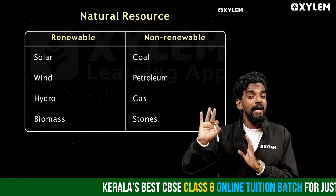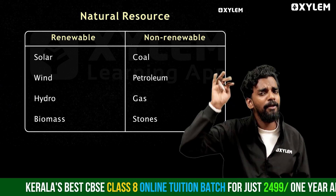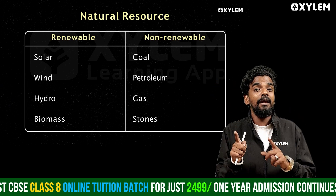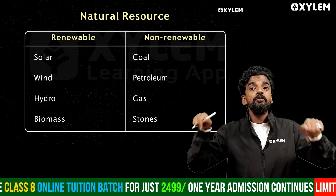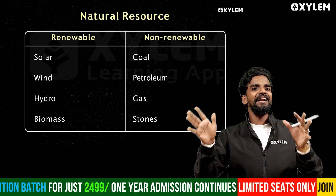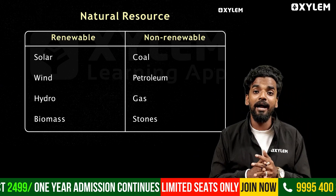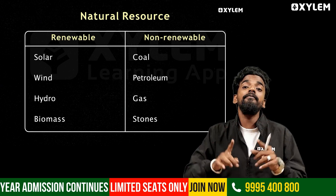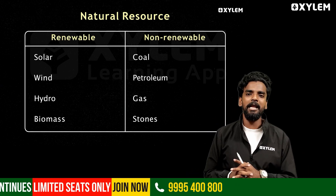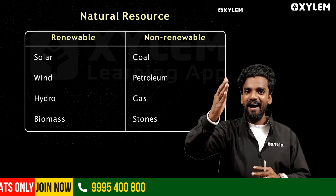So we have three types of resources. Natural resources can be classified into two — renewable and non-renewable. What are they? It should be commented below. We'll see you soon. Ta-ta, bye-bye.